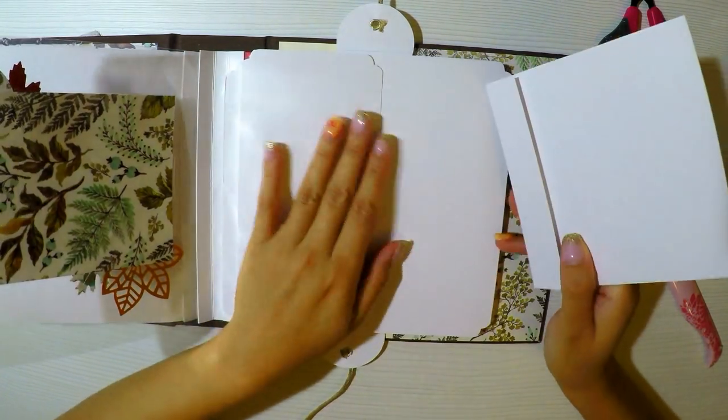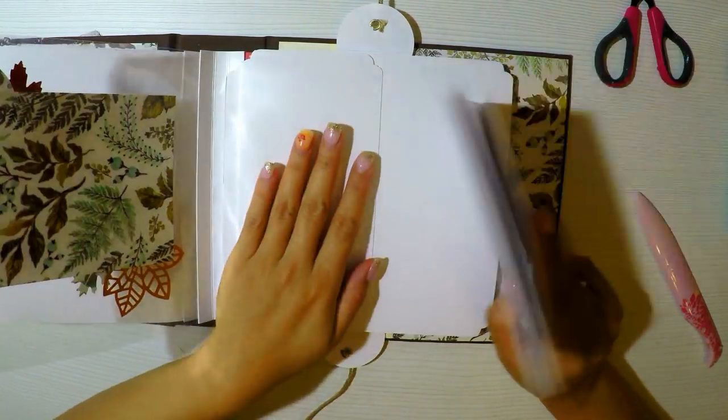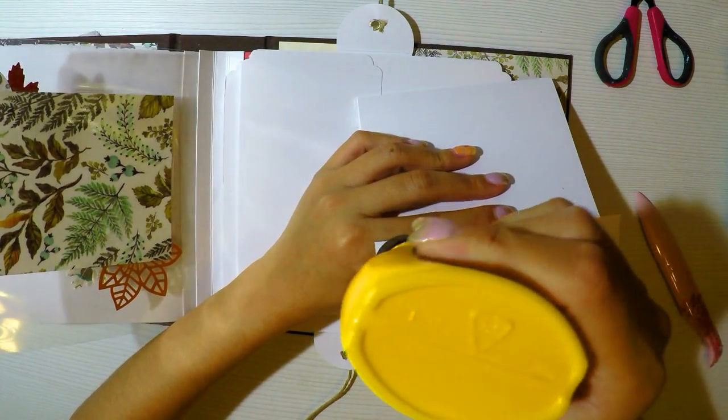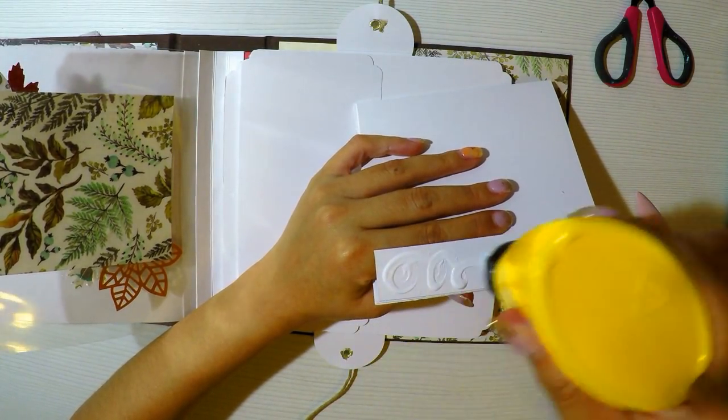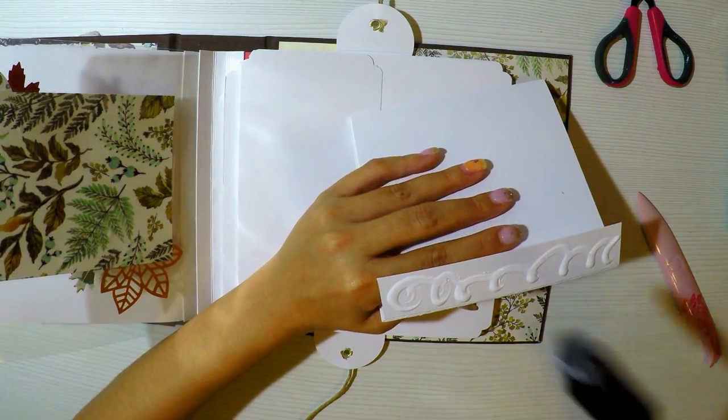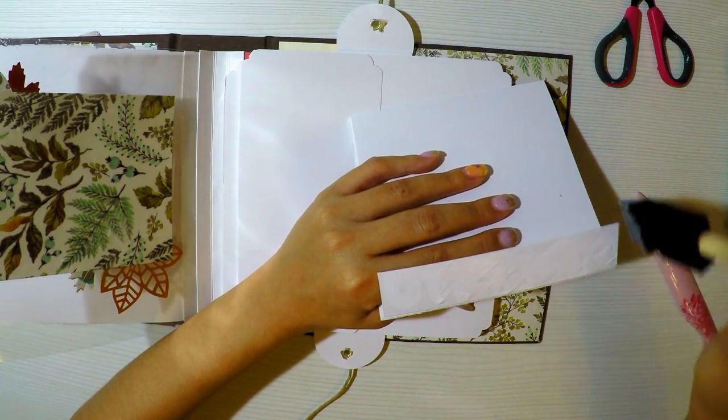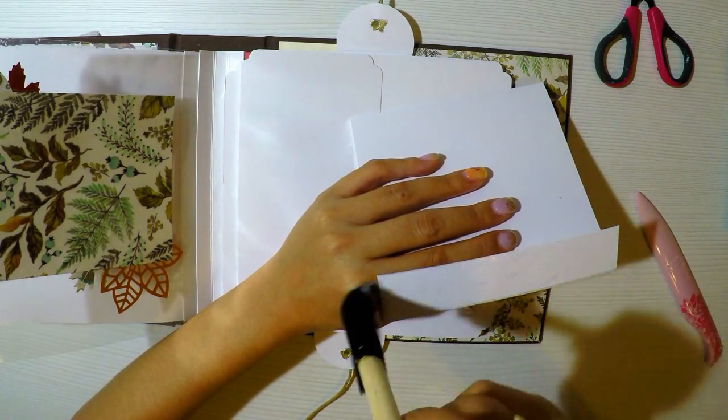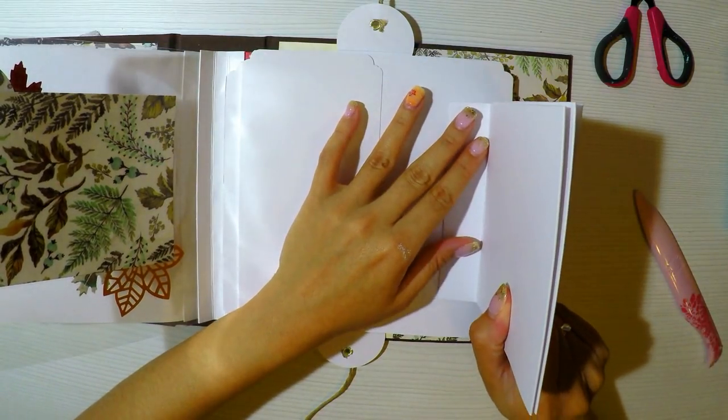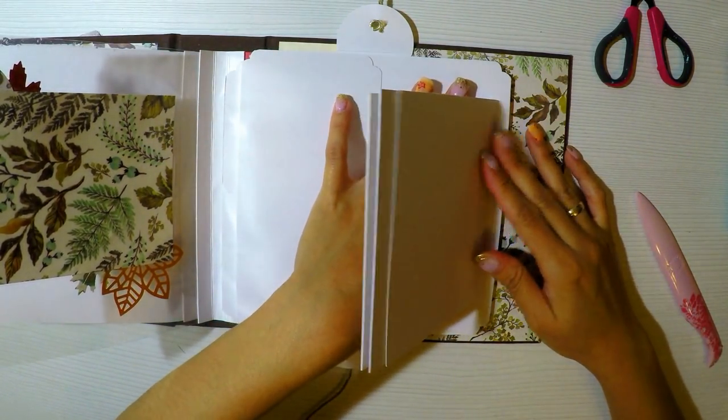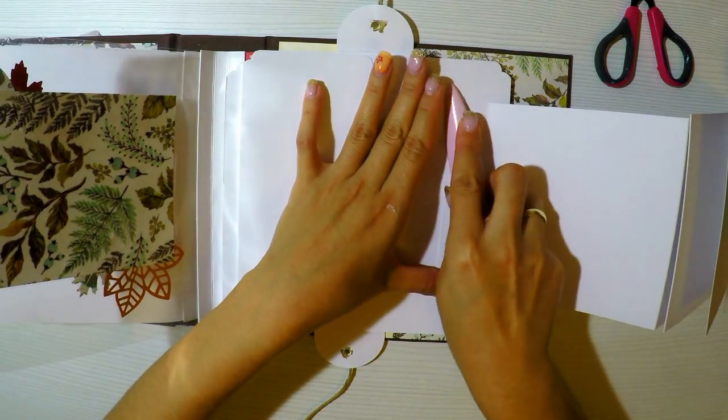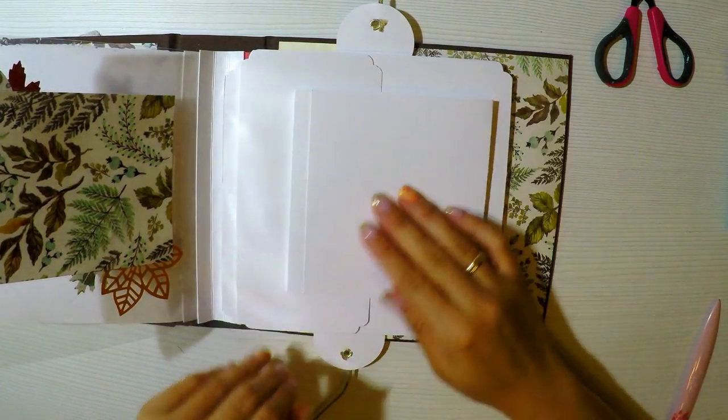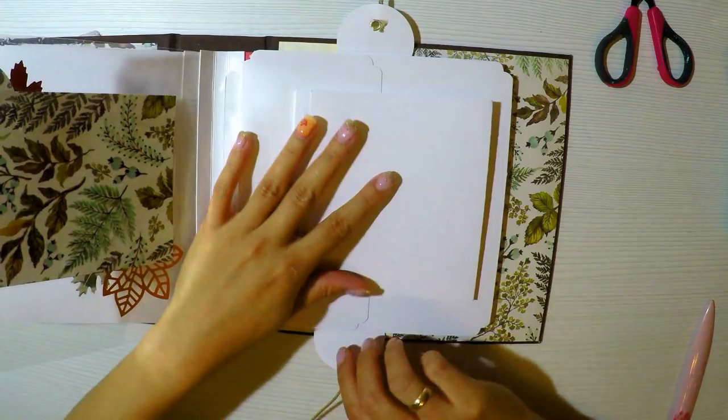Y lo que hice también lo mismo, una pequeña solapita de 2 centímetros, y simplemente lo que haré será pegar a la base del segundo acordeón o del segundo abanico. Me encanta este pincelito, es como una esponjita y va súper bien para expandir el pegamento. Así no estamos manchando una brocha o es como más delicadito. No sé, me gusta. Y presiono bien para que pegue perfectamente. Y ahora sí, ya simplemente lo que me queda es decorar, decorar toda la estructura.